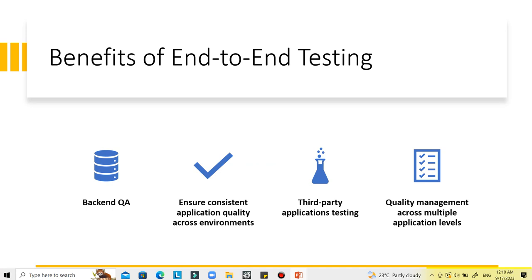The fourth benefit is quality management across multiple application levels. Modern applications are built upon complex architecture consisting of multiple layers with interconnected workflows. These layers may work fine individually but may conflict with each other once connected. End-to-end testing can verify the interactions between these individual layers and components.